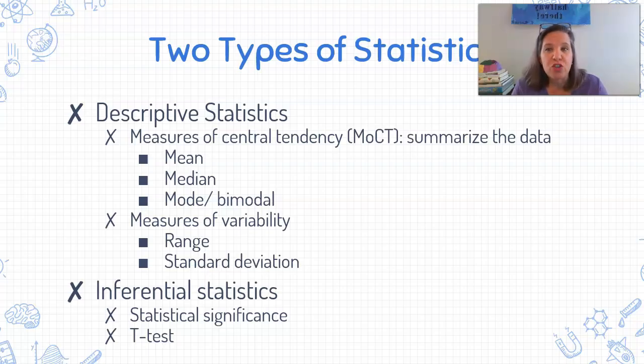Underneath descriptive statistics there's two different types. We have measures of central tendency that just summarize our data, and these are things that you have probably already heard of. I know you guys know what means are. These are the averages, the average of our data set. So mean, median, and mode. And then the second type of descriptive statistic are the measures of variability. So how much does our data vary? So here we're going to talk about range and standard deviation.